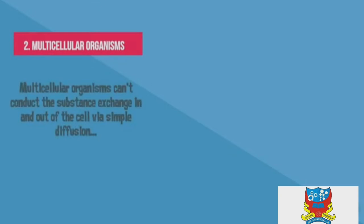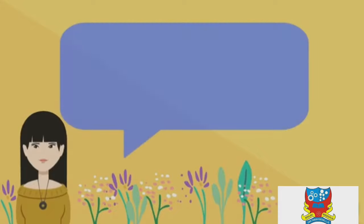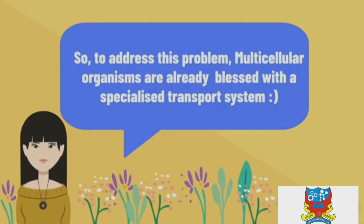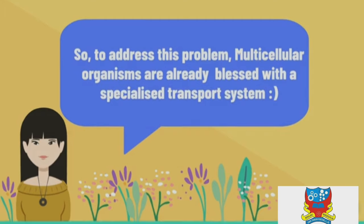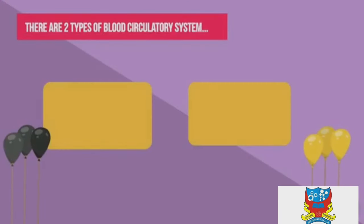Multicellular organisms, on the other hand, cannot conduct substance exchange in and out of the cell via simple diffusion. That's because multicellular organisms have a large body mass, a small total surface area per volume ratio, and the distance between the external environment and the cell is too far for direct exchange. To address this problem, multicellular organisms have a specialized transport system: the blood circulatory system.